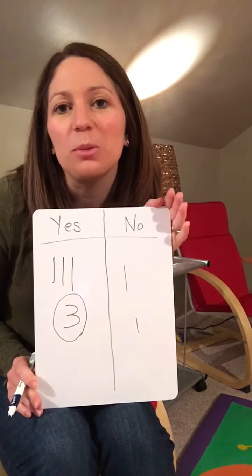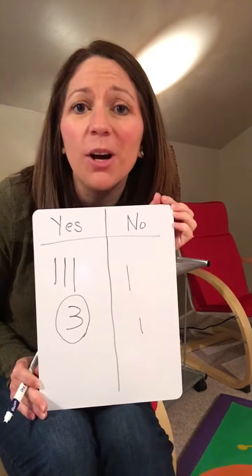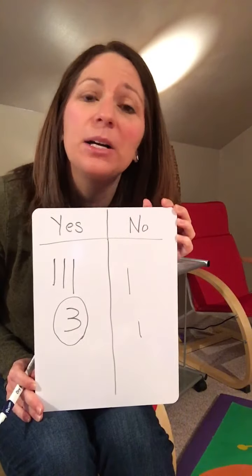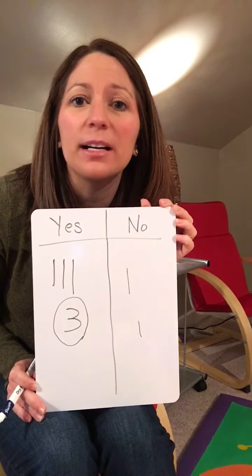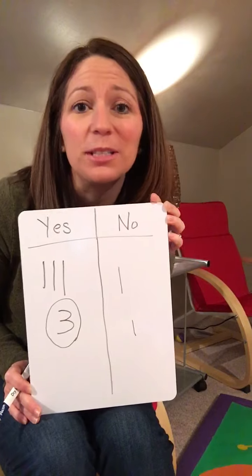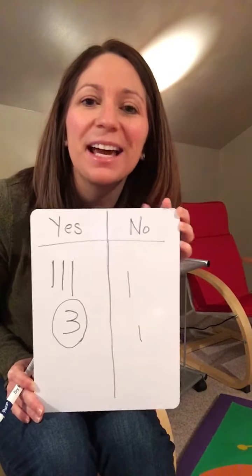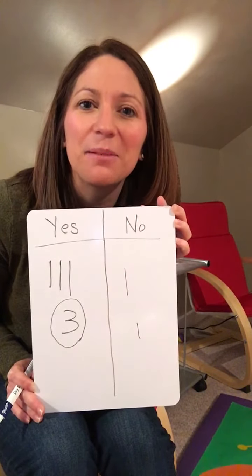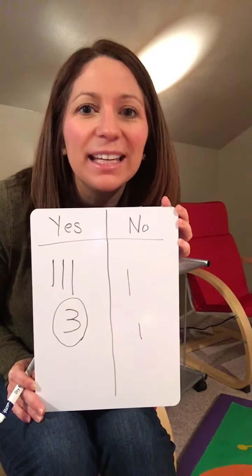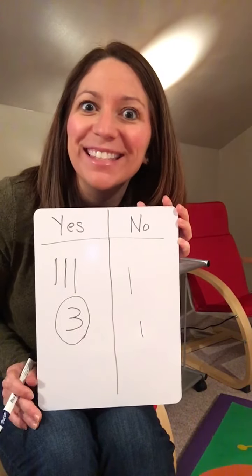Then you can erase your board and try again. You can even call grandma and grandpa, or email somebody and ask them some questions — those would be great ways to get more numbers to count up and tally. I hope you have a fun time tallying and I'll talk to you again soon.